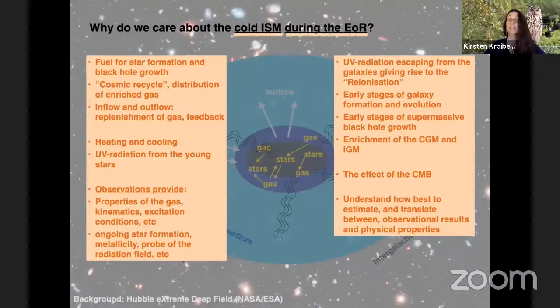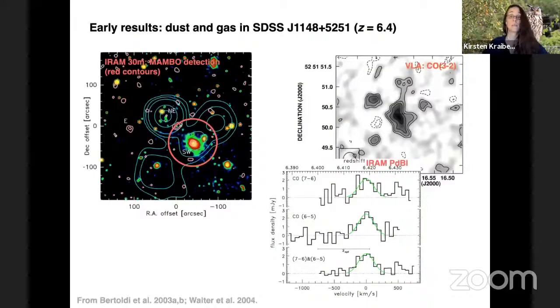It's also really important that we understand in this epoch how do we translate between our observational results and the physical properties, because this might not necessarily be exactly the same formalism that we are using as we would be using in the local universe. Some of the relations that we find from the local universe galaxies might not hold for the high redshift universe. Some of that, like in principle, physics is the same, but it might be that the conditions is such that galaxies will appear differently. There's been a lot of results coming out, and I'm just going to pick some different ones to showcase a little bit about the different progress that's been.